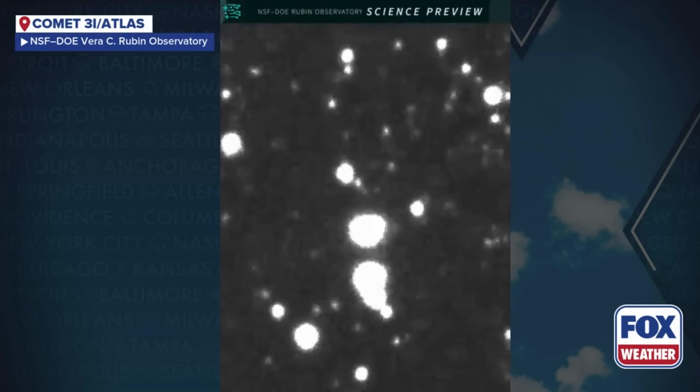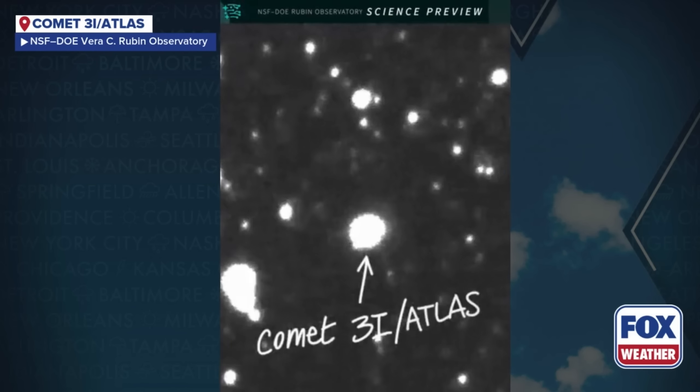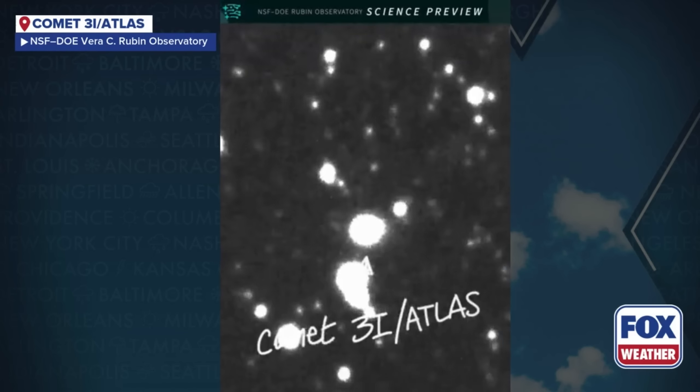The alert came from a deep space observatory in Chile, a string of code that made no sense, an object designated 3i Atlas. An interstellar visitor thought to be on a predictable path had just performed an impossible maneuver. It defied the laws of gravity. Now every major telescope on the planet is turning to track it, and a horrifying new trajectory has been calculated.